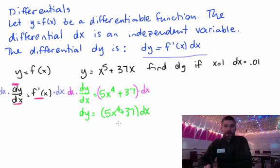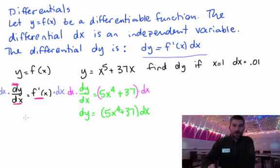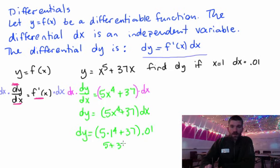Now, all I need to know is what my x value is and what my dx value is. And I'm off and running. That's all there is to it. So dy is going to be equal to 5 times 1 to the fourth plus 37 times 0.01. That's it. So 5 plus 37 times 0.01.